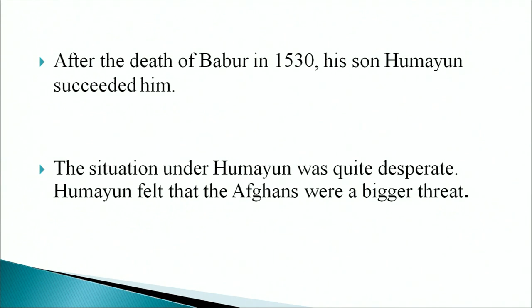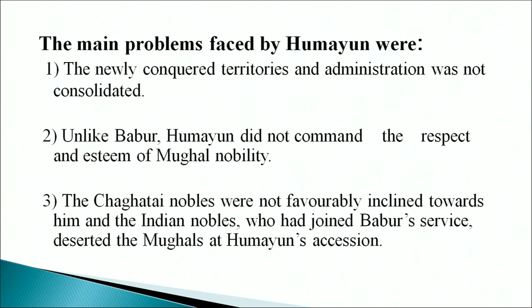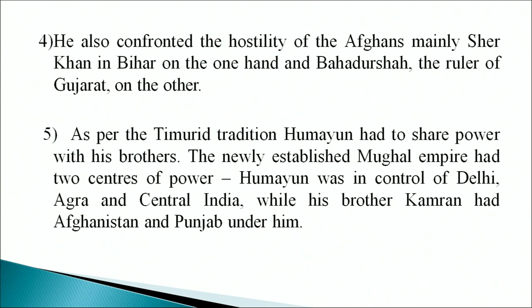After the death of Babur in 1530 his son Humayun succeeded him. The situation under Humayun was quite desperate. The main problems he faced were that the newly conquered territories and administration were not consolidated. Unlike Babur, Humayun did not command the respect and esteem of Mughal nobility. The Central Asian nobles were not favorably inclined towards him, and the Indian nobles who had joined Babur's service deserted the Mughals at Humayun's accession. He confronted the hostility of Afghan chiefs, mainly Sher Khan in Bihar, and Bahadur Shah the ruler of Gujarat. As per Timurid tradition, Humayun had to share power with his brothers. His brother Kamran controlled Afghanistan and Punjab.